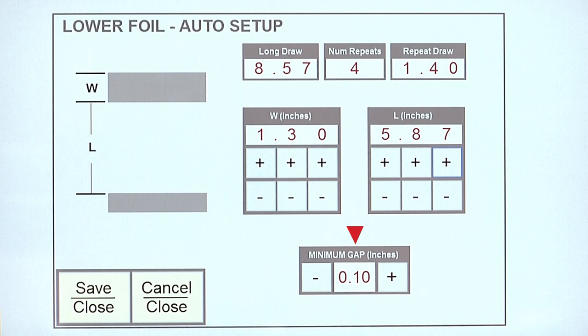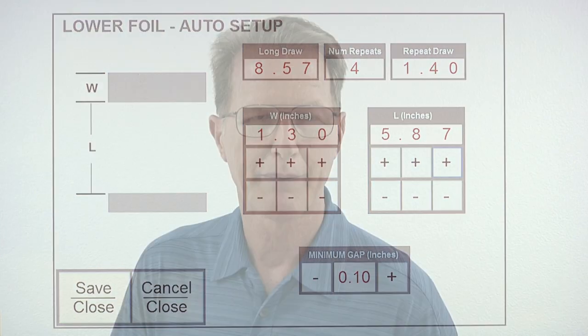A minimum gap adjustment is provided to give operators additional control over image area spacing when using this feature. Minimum gap is the smallest spacing the software will allow between foil image areas. The minimum default gap is one tenth of an inch, and it can be adjusted using the plus and minus buttons provided.